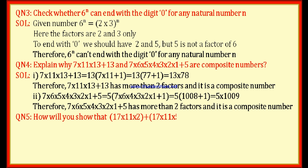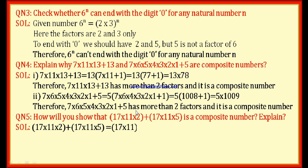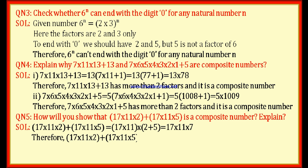Question number 5: how will you show that 17 × 11 × 2 + 17 × 11 × 5 is a composite number? Here, 17 × 11 is common in both terms, so we factor it out: 17 × 11 × (2 + 5) = 17 × 11 × 7. This number has factors 1, 7, 11, 17, and others — more than 2 factors. Therefore, the given number is a composite number.